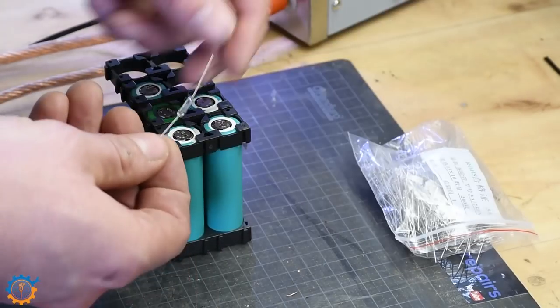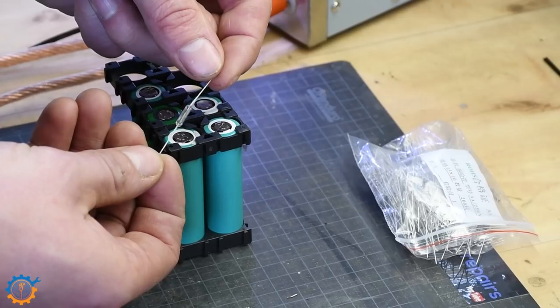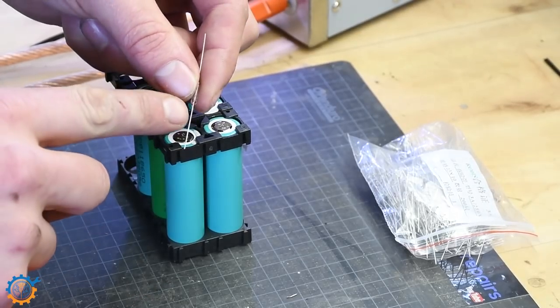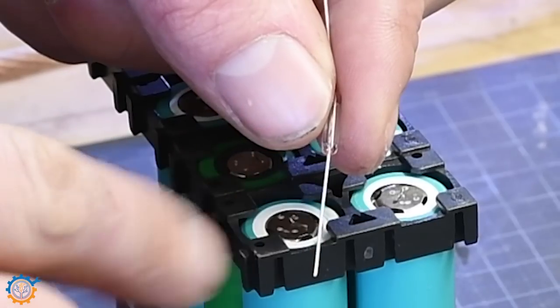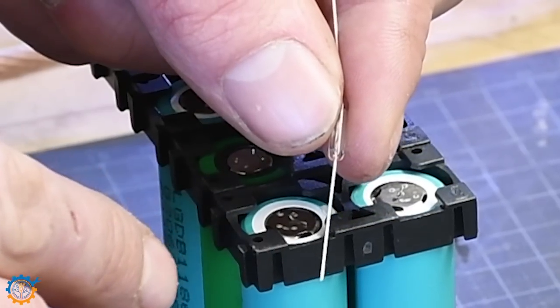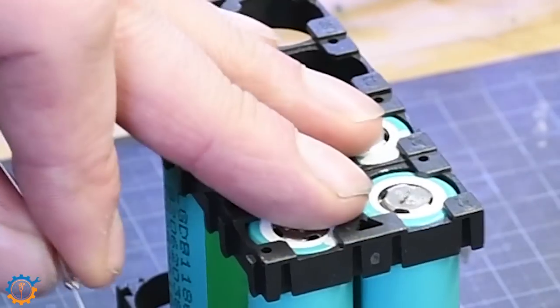If we look at the fuses they're quite small, but the diameter of these legs is a lot thicker than the thin wire I'm using normally. So let's go ahead and see if we can spot weld this.